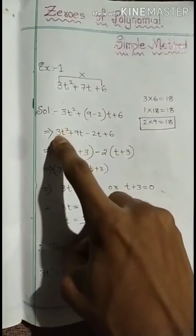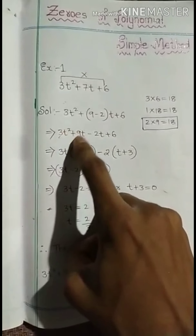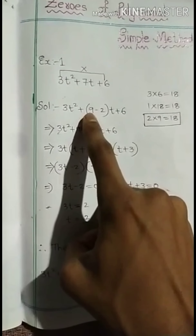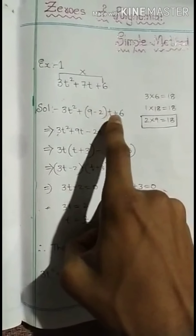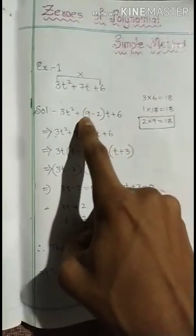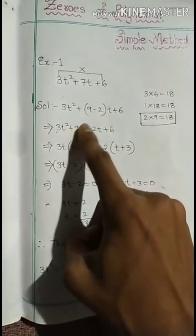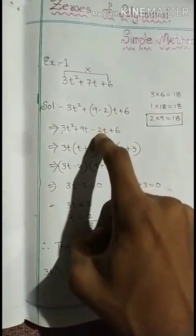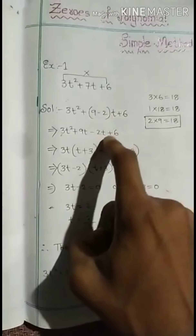So we rewrite the polynomial as 3t² plus 9t minus 2t plus 6.